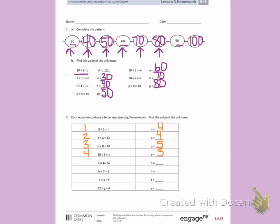D times 4 equals 24. 4, 8, 12, 16, 20, 24. D equals 6.